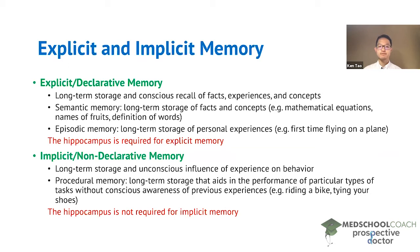Next we have implicit memory, which is also called non-declarative memory. This is the long-term storage and unconscious influence of experience on behavior — something that you do unconsciously. One type of implicit memory is procedural memory, which is the long-term storage that aids in the performance of particular tasks without conscious awareness of previous experiences.